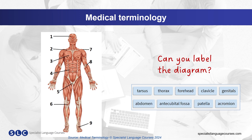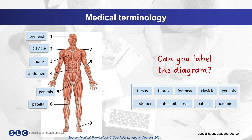And here are the answers: forehead, clavicle, thorax, abdomen, genitals, patella, acromion, antecubital fossa, tarsus.